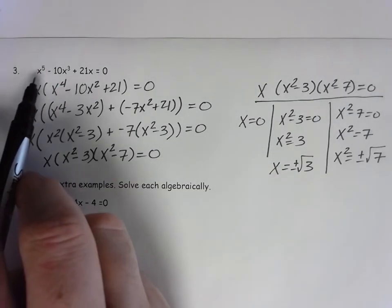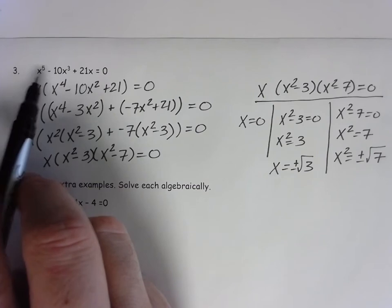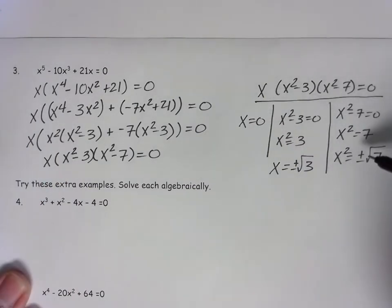Notice the power, the highest exponent we have is 5. 1, 2, 3, 4, 5 roots. This will have 5 roots here.